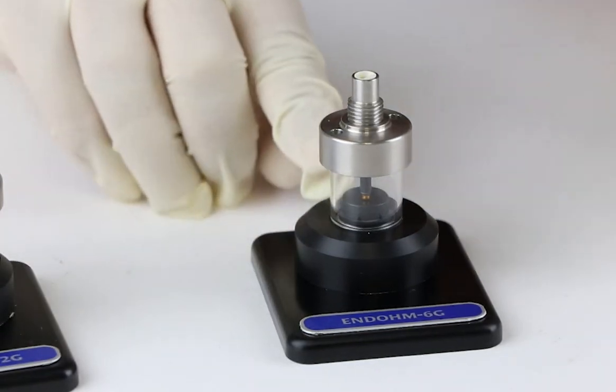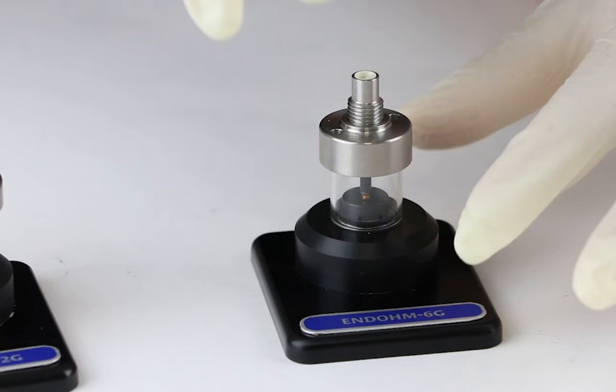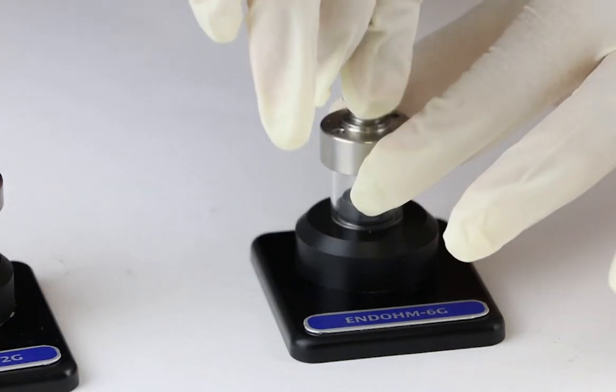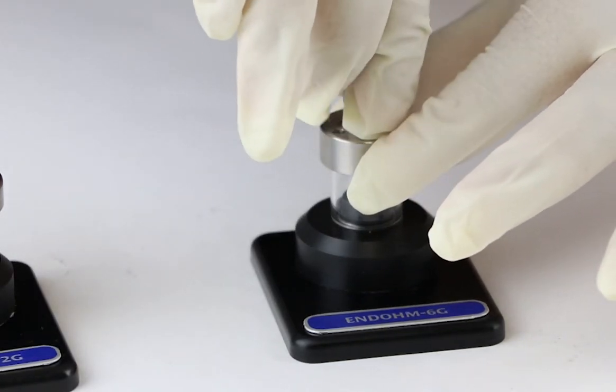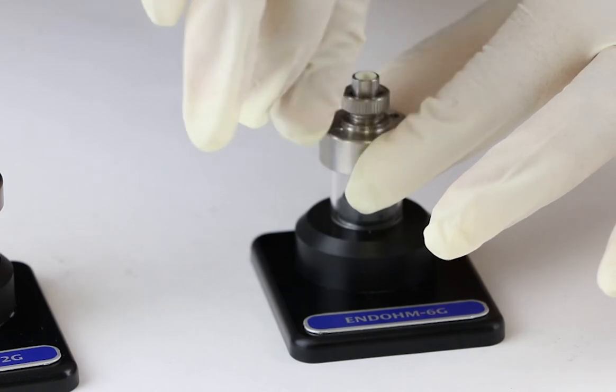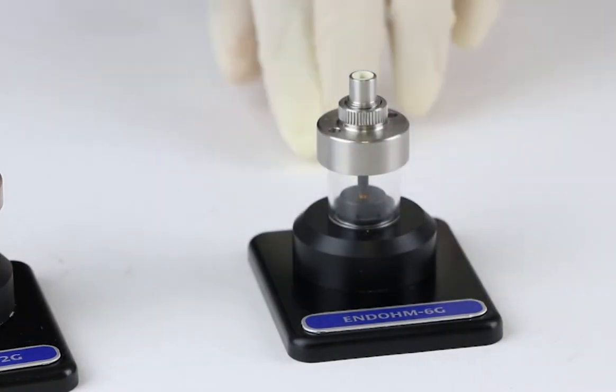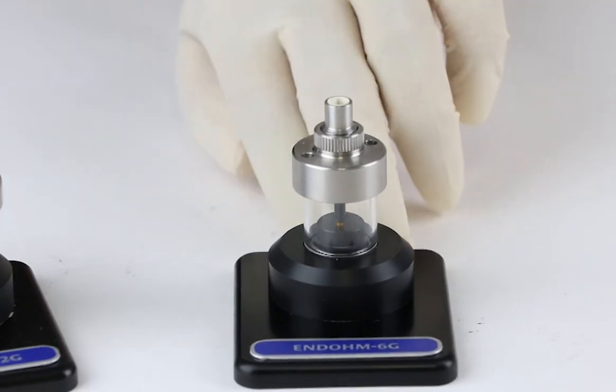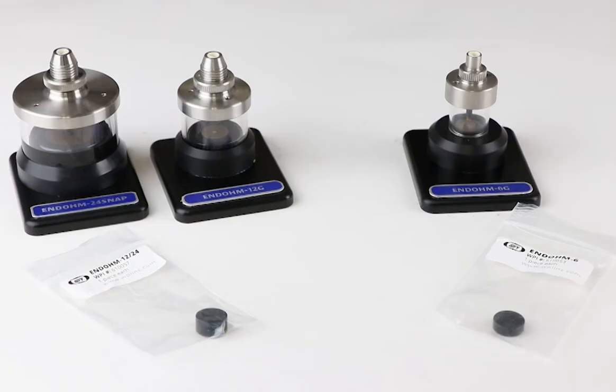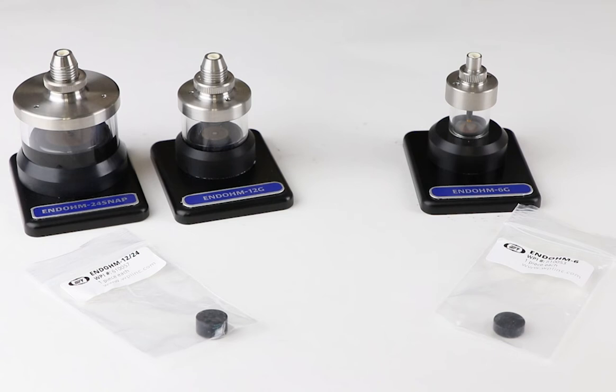Once the top electrode touches the spacer, lock the top electrode in place with the ring. Thus, using the spacer disc, you can maintain a consistent fixed distance of 4mm for endome 6G or 6mm for either endome 12G or endome 24 snap.